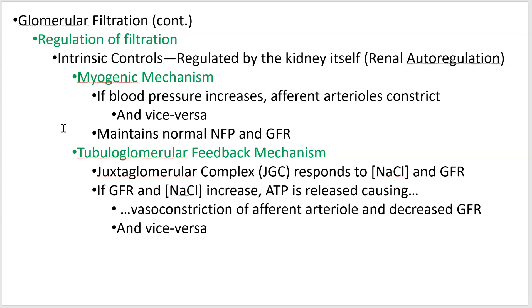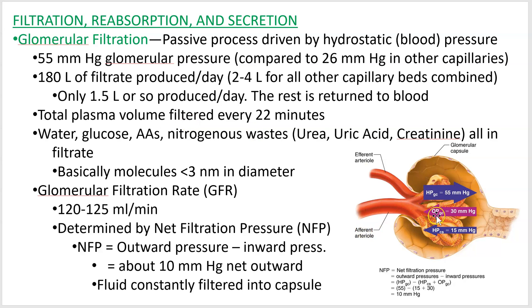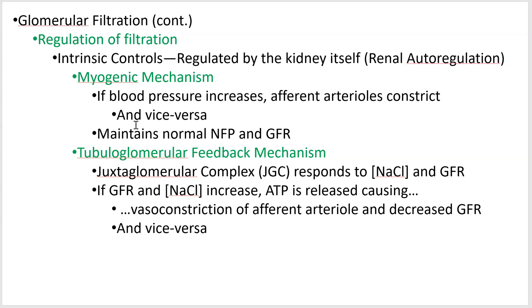The myogenic mechanism — myogenic means started by your muscles — works like this: if blood pressure increases into the kidney, the afferent arterioles, which are the vessels that lead into the glomerulus, constrict. If blood pressure rises, the muscle of that blood vessel constricts; if it constricts, less blood gets in, less fluid leaks out. By constricting those small blood vessels you resist producing too much urine and potentially damaging the glomerulus.